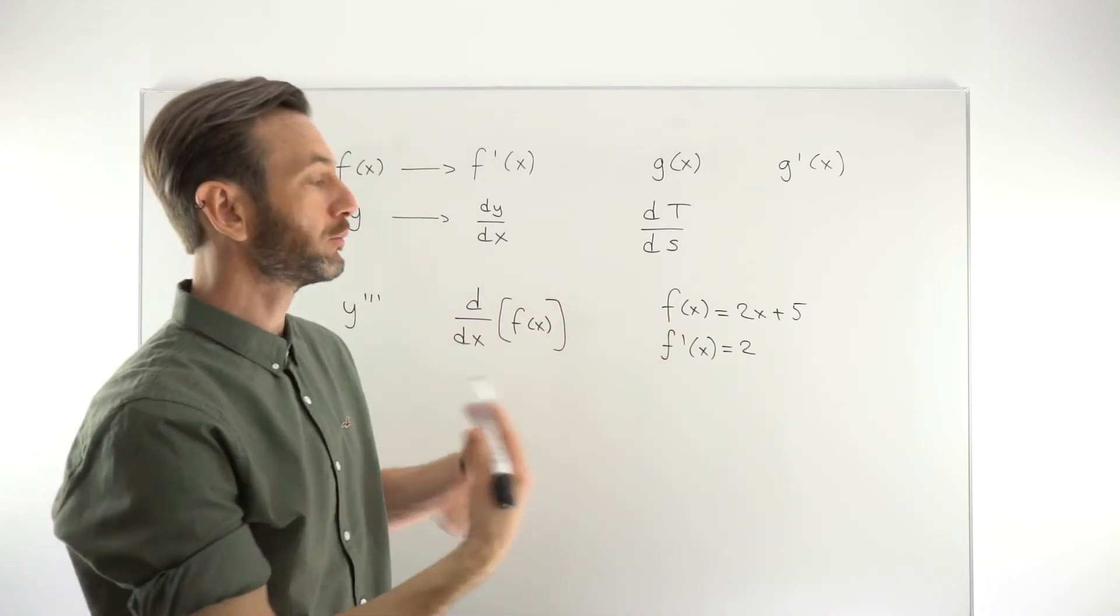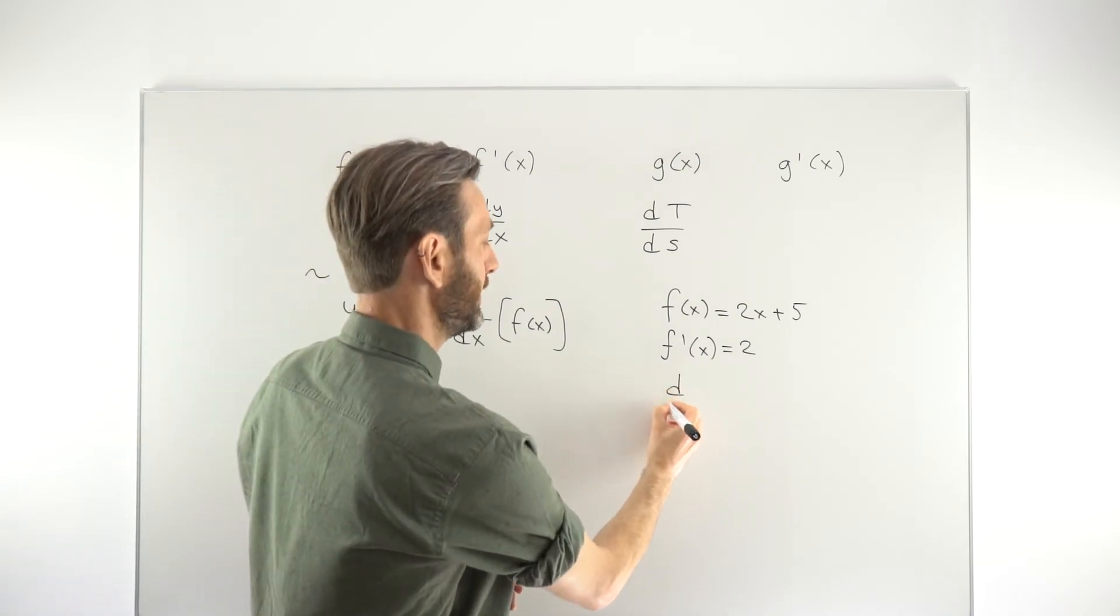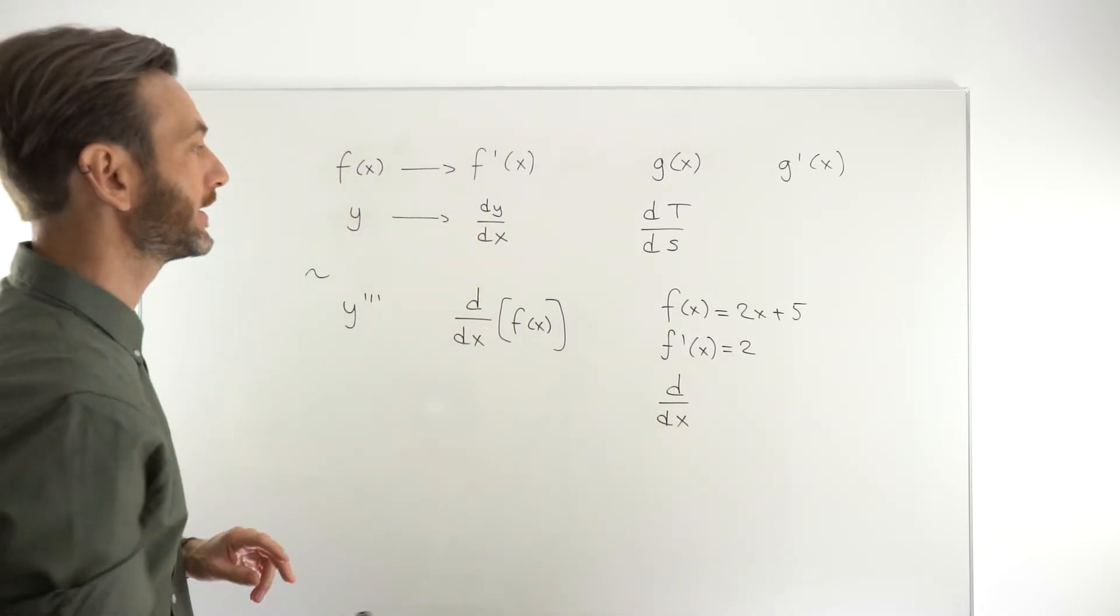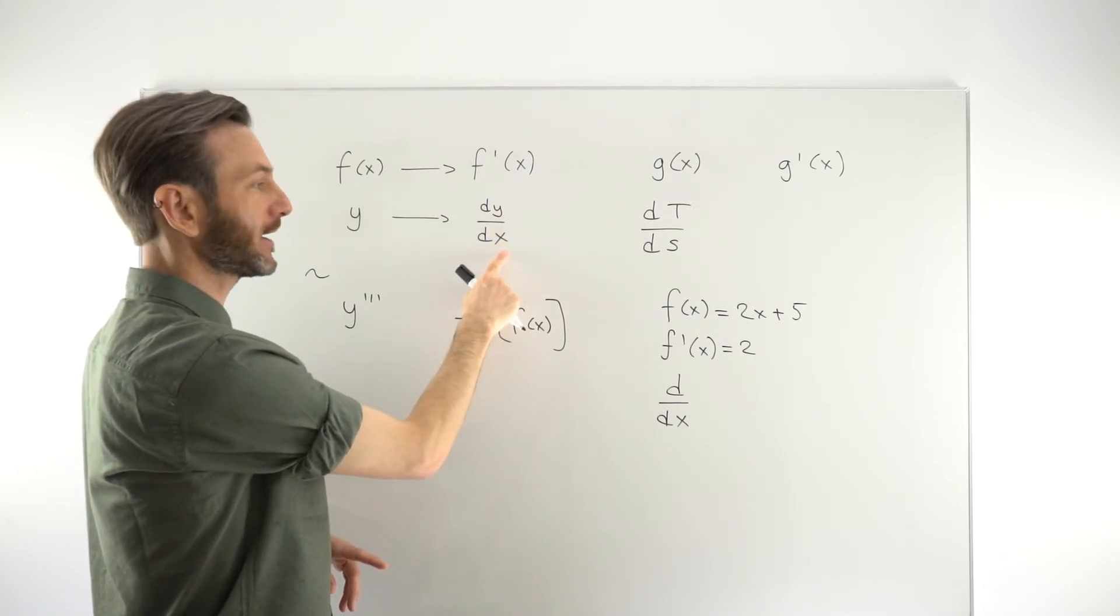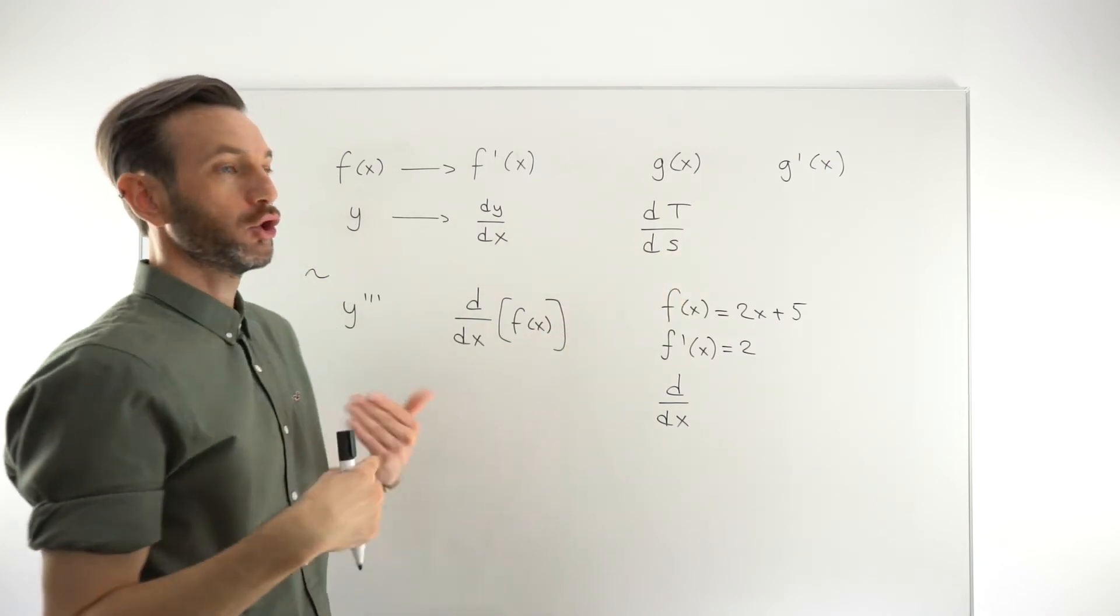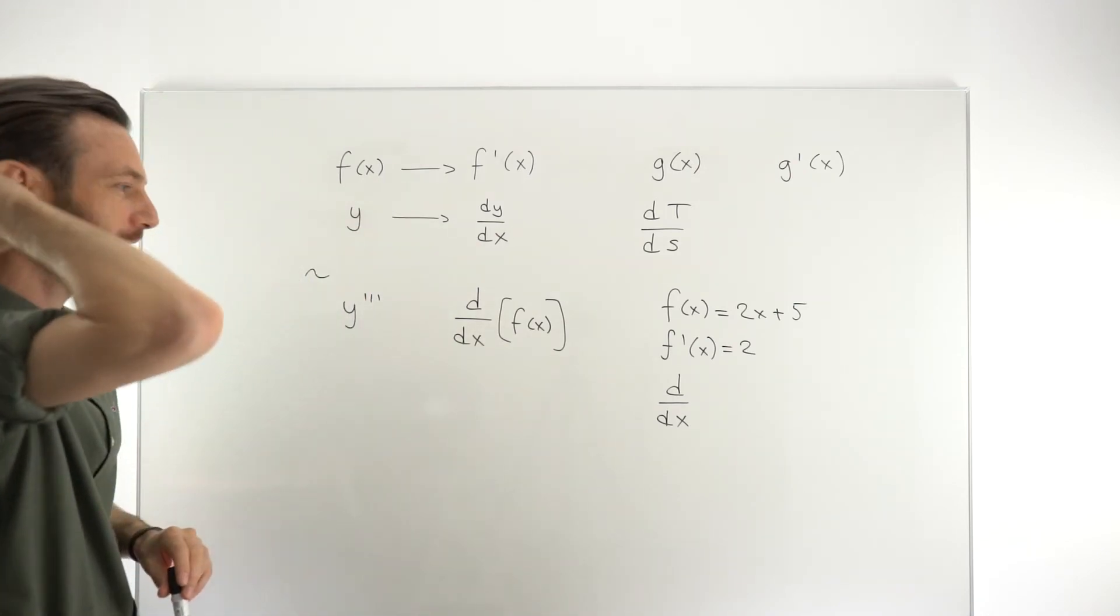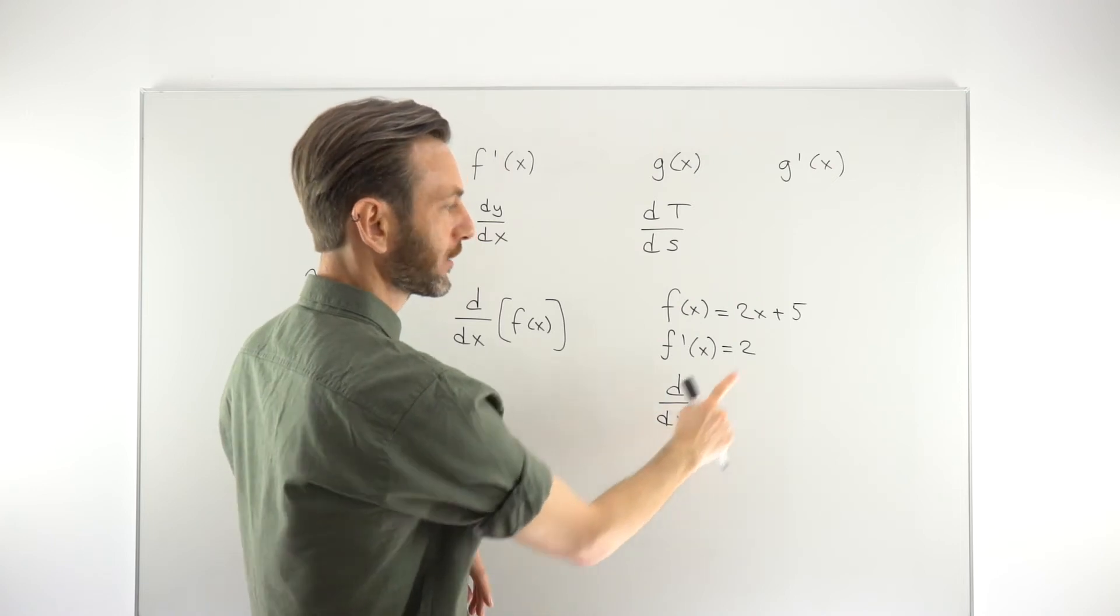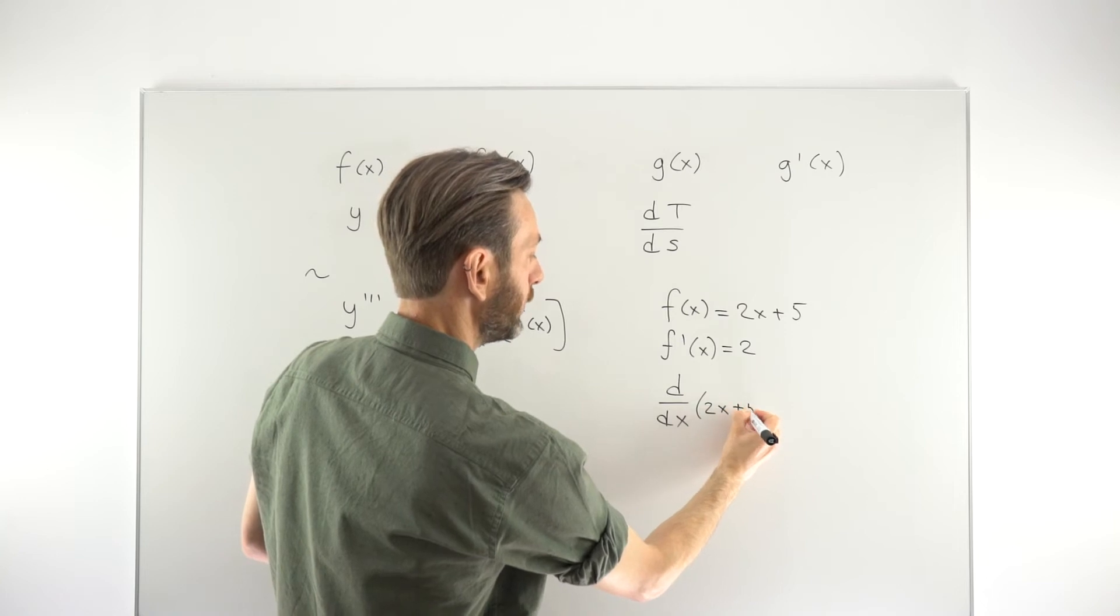If you wanted to say though, I'm going to differentiate this function, you could write it as d dx, derivative with respect to x. That's how we say that. This is how we say this as well, by the way. This is the derivative of y with respect to x, derivative of t with respect to s in this case. Usually we don't have to say those words out loud, but that's how you should kind of say it in your head. And so in this case, we would say the derivative with respect to x of the function 2x plus 5.